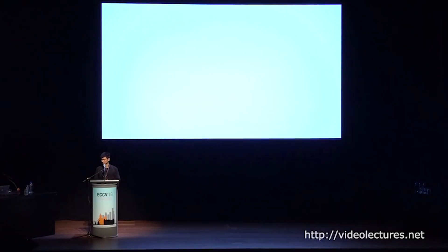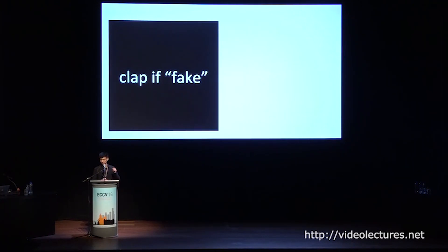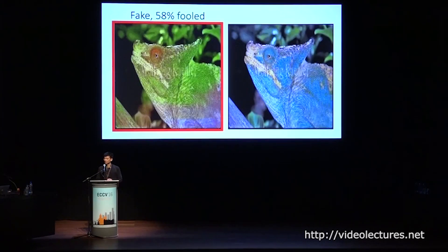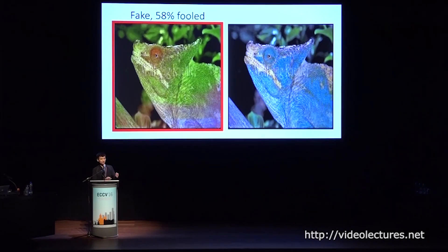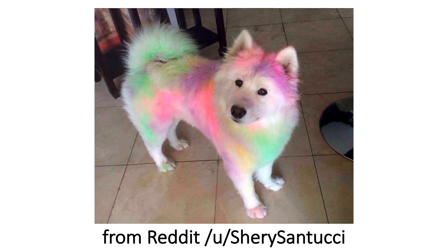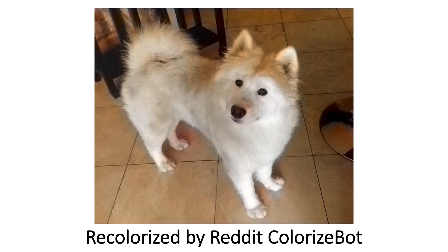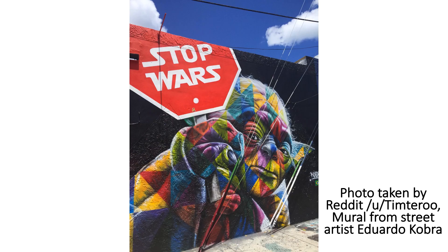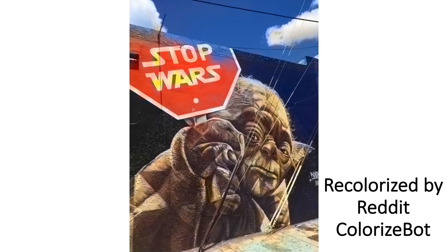Let's try one final test. Image number one, and image number two. Clap if the left is fake, and clap if the right is fake. The ground truth image was of a blue chameleon, but our network learned that chameleons typically appear green. In these outlier cases, our network can make predictions that are more prototypical than the input image, and we can actually get fooling rates above 50%. There are other examples of this behavior: a Reddit user's dog taken out for a color run can be cleaned up by our system, and a colorfully tiled Yoda can be made green again. These images were processed by the Reddit ColorizeBot, which uses our system on the back end.